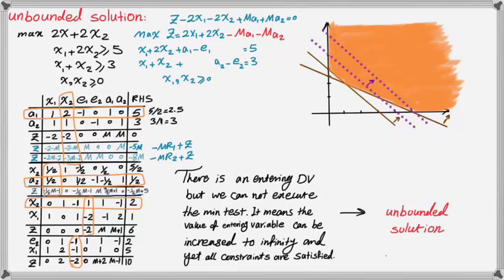So as you see, if you roll your pen toward the increase of objective function, you will not find any corner point. In this case, there is no final solution to the problem. So your solution is unbounded.